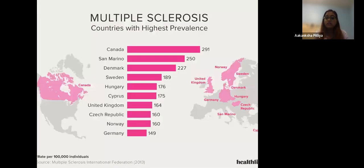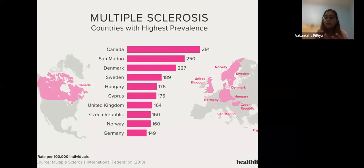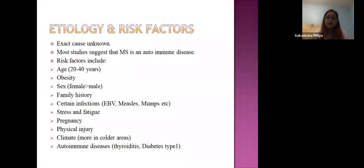Multiple sclerosis distribution by countries: Canada has the highest prevalence, which may be due to high sensitivity and specificity of testing, a more aware population, or higher numbers presenting early in the disease. There may also be a higher proportion of white people living in Canada. Canada has the highest prevalence, followed by San Marino and Denmark.